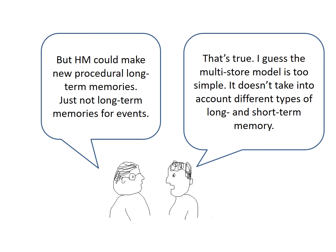The case study of HM also points to difficulties with the multi-store model of memory. HM could make new procedural long-term memories — that's memories for skills such as riding a bicycle or drawing. However, his long-term memory for events, which is called episodic memory, was damaged. This shows that there's a distinction between different types of long-term memory. The multi-store model of memory doesn't take into account different types of long- and short-term memory, so a criticism of it is that it's too simplistic.